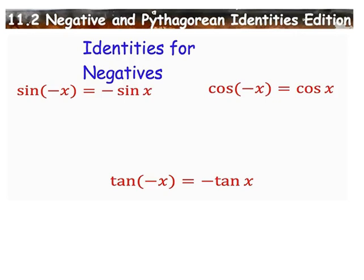Welcome to section 11.2. Today we're going to focus a little bit more on these identities and introduce some new ones, specifically negative identities and Pythagorean identities. The Pythagorean identities are offshoots from the Pythagorean theorem, that's why we call them Pythagorean identities, but we'll get there in a second.